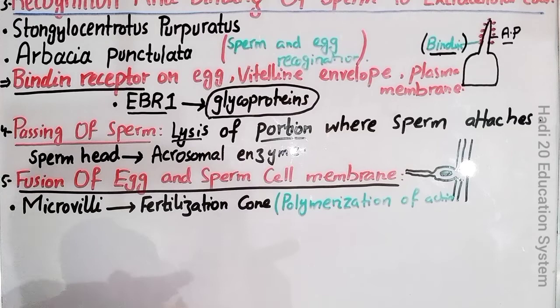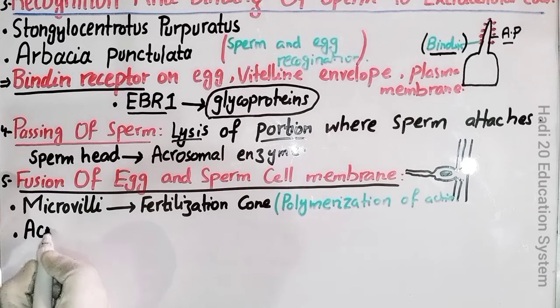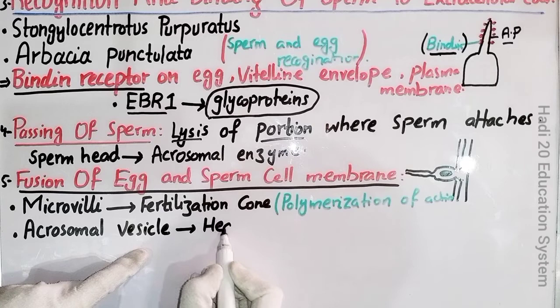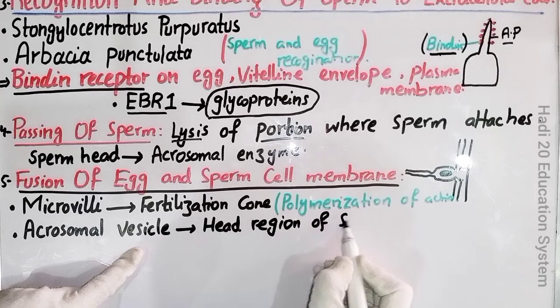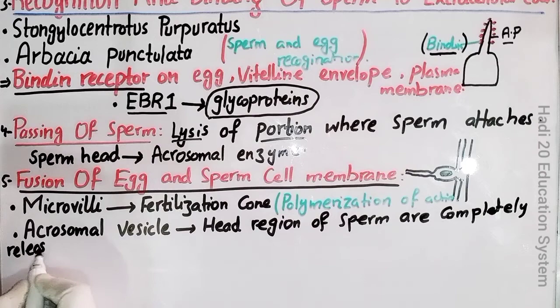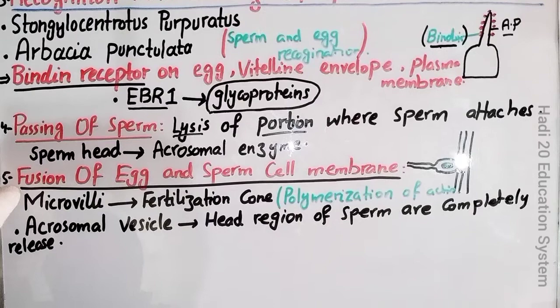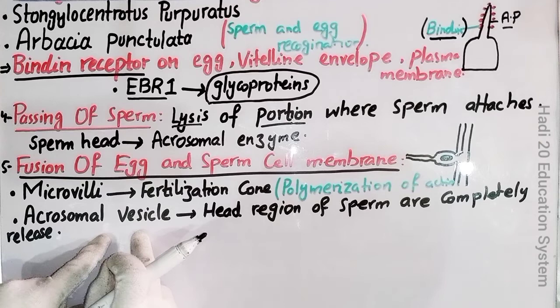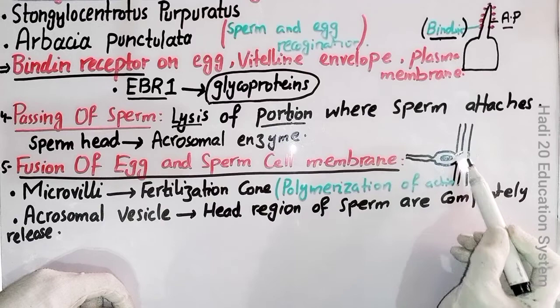اب dear friends یہاں پر next کیا ہونے والا ہے؟ یہاں پر جو acrosomal vesicles ہیں — acrosomal vesicles جو کہ head region میں موجود ہیں — وہ completely release ہو جائیں گے۔ Acrosomal vesicles in head region of sperm are completely released۔ اور جیسے یہ release ہوں گی، اس کے نتیجے میں جو sperm nucleus ہے اور جو tail ہوگا، وہ egg کے cytoplasm میں گزرنا شروع کر دیں گے۔